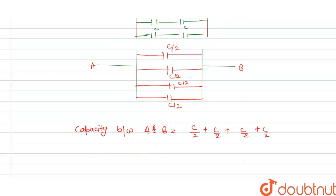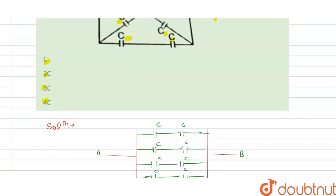So from this, we can say that capacity between A and B is equals to 2C, and this is the answer for the question. Now we check which option is correct here, so our option B is correct. Thank you.